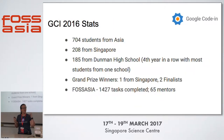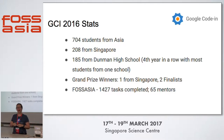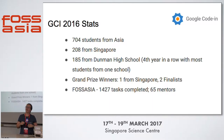We had 704 of our 1,380 students this year from Asia — so more than half. 208 were from Singapore, and 185 are from Dunman High. This is the fourth year in a row that Dunman High has had the most students from any given school in the program. Thank you all for helping out.